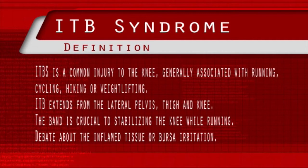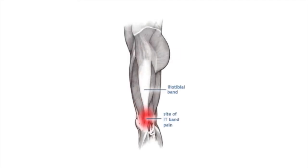Iliotibial band syndrome is believed to be associated with excessive friction between the tract and the lateral femoral epicondyle, which inflames the tract or the bursa. However, the perception of movement of the ITB across the epicondyle is an illusion caused by changing tension in its anterior and posterior fibres. Nevertheless, slight medial and lateral movement is possible, and it has been proposed that ITB syndrome is caused by increased compression of a highly vascularised and innervated layer of fat and loose connective tissue that separates the ITB from the epicondyle.